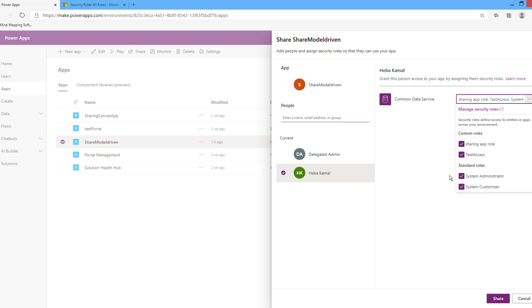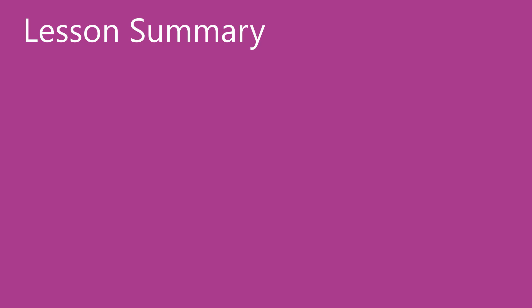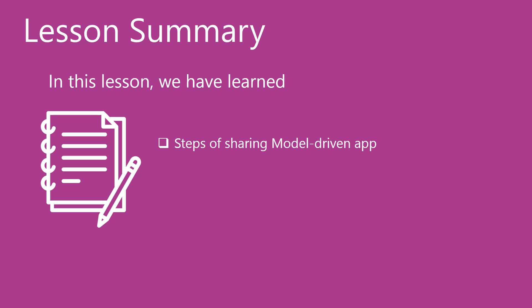After assigning the roles that you want, click Share. This completes sharing model-driven apps. In this lesson, we learned the steps for sharing model-driven apps: assigning security roles to the model-driven app and assigning security roles to the users. We also learned how to create security roles from within the sharing process. You will find a separate lesson discussing security roles in the administration module in Module 7.